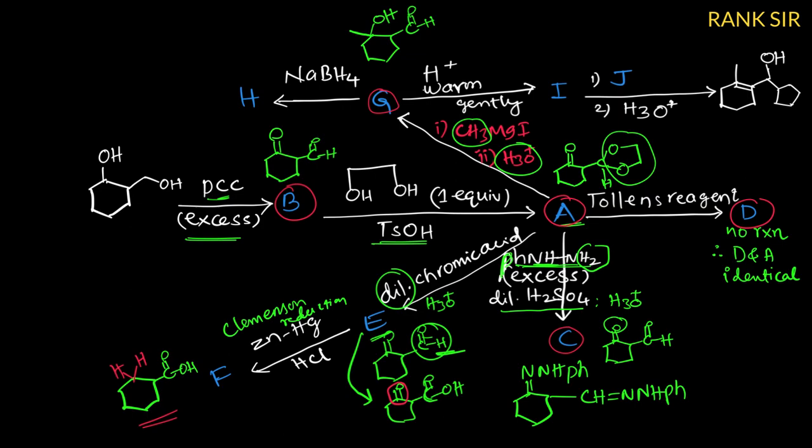Next, sodium borohydride is a reducing agent. Therefore, it reduces aldehyde. What is the H product now? Already this is an alcohol, so now this is converted into CH2OH. That is the H structure.